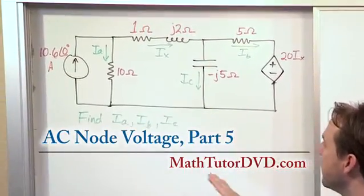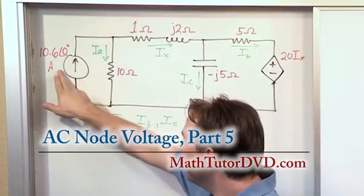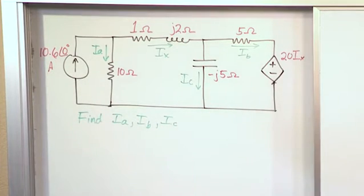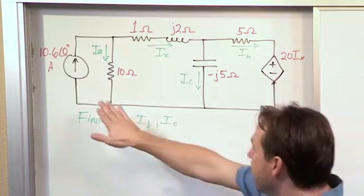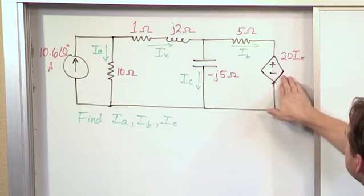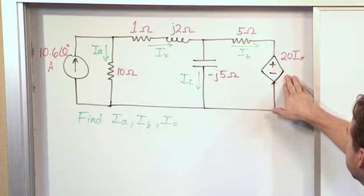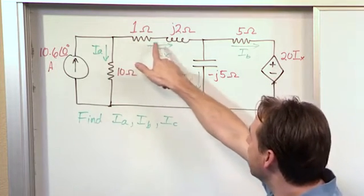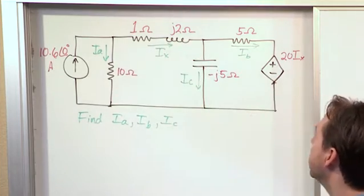The interesting thing about this problem is we have a current source, which is a fixed current source, 10.6 at an angle of 0 amps, which of course is a phasor representation, so this is an AC signal. And then you have a dependent voltage source over here, the value of which is 20 times Ix, where Ix is the current flowing through this part of the circuit up there.